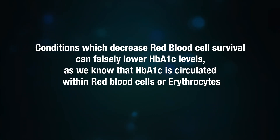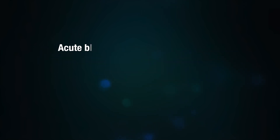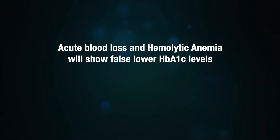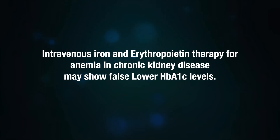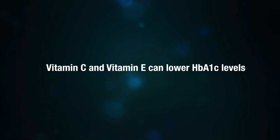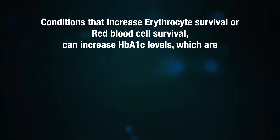How accurate are the test results? There is a possibility that results may not be accurate. Conditions that decrease red blood cells can falsely lower HbA1c levels, since HbA1c circulates within erythrocytes. Accuracy is affected by hemoglobin variants — in persons with hemoglobin E or F, low HbA1c values are seen. Acute blood loss and hemolytic anemia will also show falsely lower levels. Intravenous iron, erythropoietin therapy for anemia in chronic kidney disease, and vitamins C and E can also lower HbA1c levels.